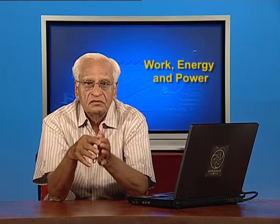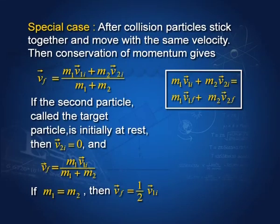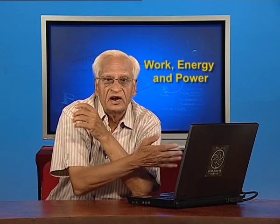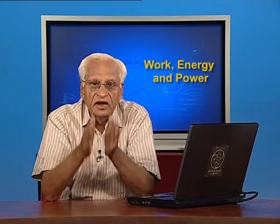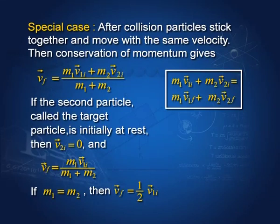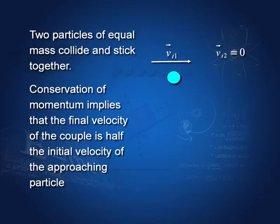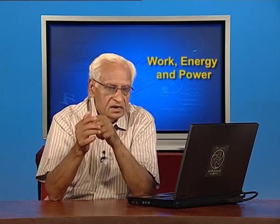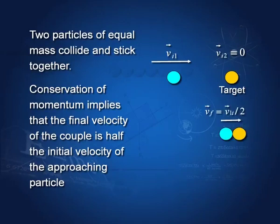If the second particle — the target — is initially at rest, then v₂ᵢ is 0. Then vf, the final velocity of the two sticking particles, is m₁v₁ᵢ divided by (m₁ + m₂). If m₁ equals m₂, the final velocity is half the initial velocity of particle 1. Here, particle 1 is shown by a blue dot with velocity v₁, and the target v₂ is at rest. After the collision, they stick together and move with velocity vf = v₁/2.